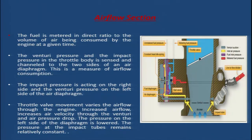On the two sides of the air diaphragm: low pressure on the left side and high impact pressure on the right side. This results in a pressure differential across the diaphragm called the air metering force. Since high pressure is on the right and low pressure on the left, this air metering force has the tendency to shift the diaphragm to the left.